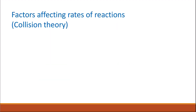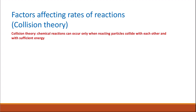So what are the factors affecting the rate of chemical reactions? First of all, we need to understand what is the collision theory. For any chemical reaction to start or to happen, you need the particles to collide with each other with sufficient energy. The collision theory states that chemical reactions can occur only when reacting particles collide with each other and with sufficient energy.